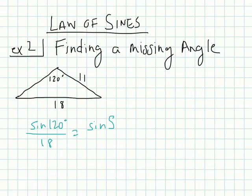So the sine of 120 over 18 will equal the sine of, we'll just call this side S. So this is what we're trying to find. Sorry, we'll call this angle S, not side S. I should have labeled, we'll call this SRT. Okay, so sorry, the question was find angle S. Find the measure of angle S. So again, the sine of 120 over 18 equals the sine of, we don't know, over 11.